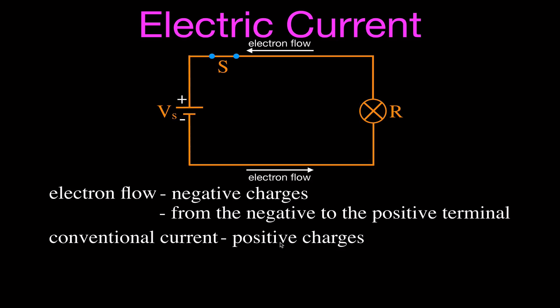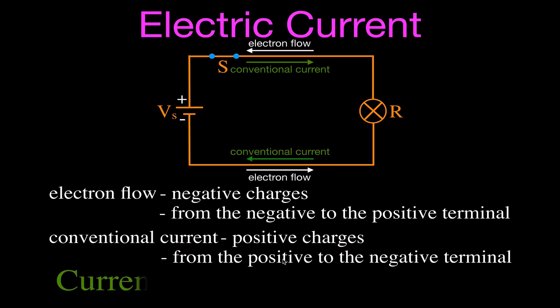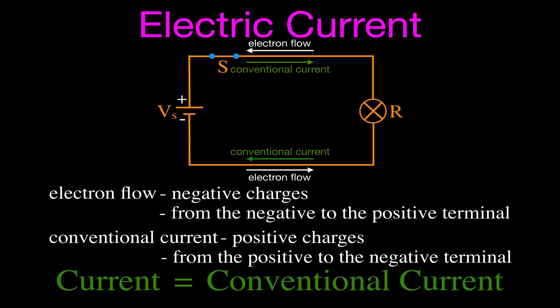Even though that convention was established 200 years ago, and we now know it's the electrons that are actually flowing, we still talk about current as the flow of positive charges. The positive charges are repelled by the positive terminal and attracted to the negative terminal, so the conventional current flows in the opposite direction of electron flow — from the positive to the negative terminal. Current equals conventional current, and conventional current is the flow of positive charge.